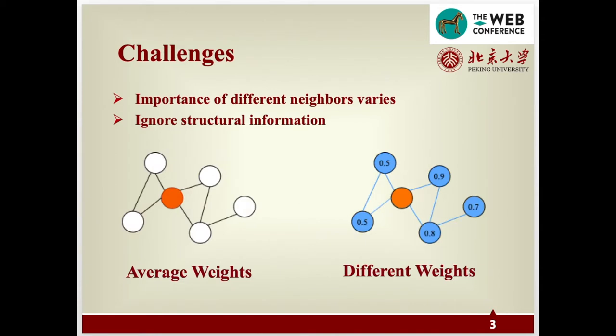Graph neural networks define the convolution operation on the neighborhood of nodes. They collect the neighborhood information of the central node through different aggregation functions, like mean aggregation, to generate representation of nodes. For a central node, the importance of different neighbors varies. Traditional graph neural networks do not distinguish the importance of nodes. Most of them treat all nodes in the neighborhood equally.